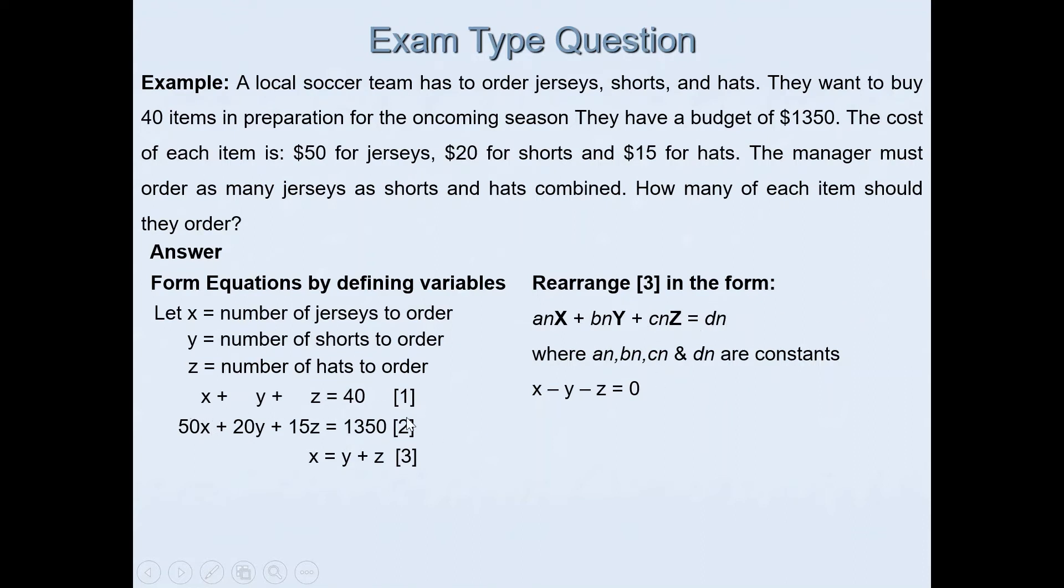Equations one and two are okay but equation three we need to rearrange because y and z are on the other side of the equation. By moving y and z to the left hand side, y will become minus y and z will become minus z. So the new equation is x - y - z = 0.